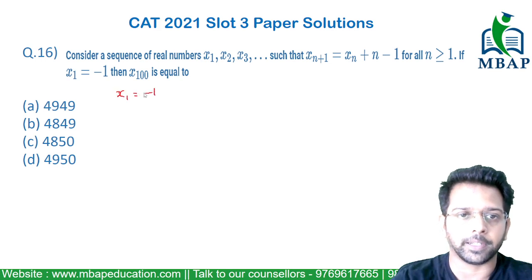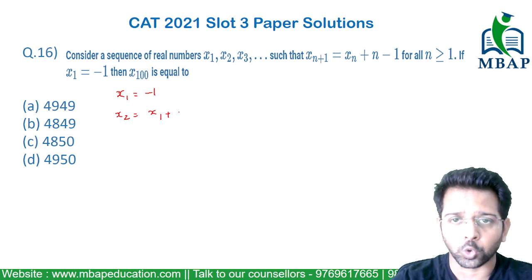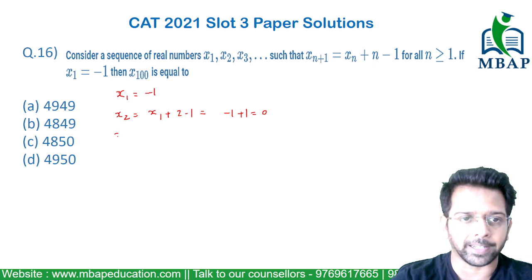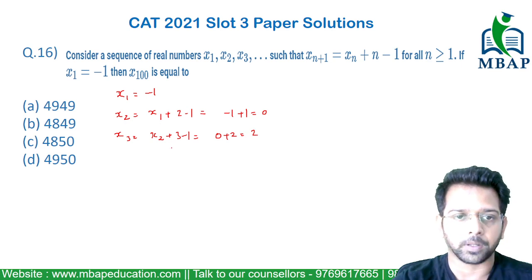The value of x1 has been given as minus 1. Now, if I have to find the value of x2, x2 will be x1 plus 2 minus 1. x1 is minus 1, so it is minus 1 plus 1, which becomes 0. Let's find the next value, x3. x3 will be x2 plus 3 minus 1. x2 is 0 plus 2, so the next term is 2.